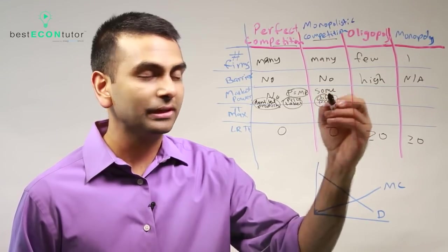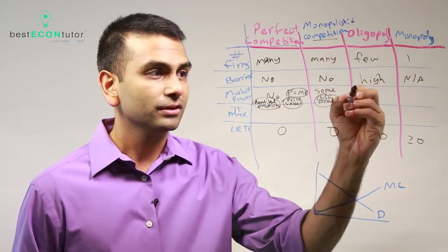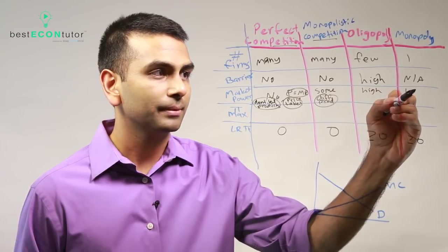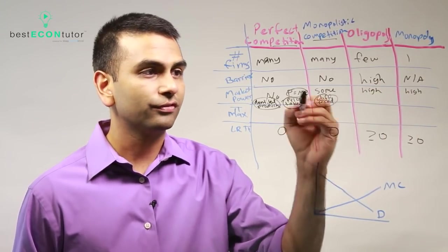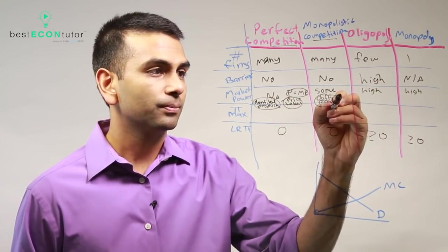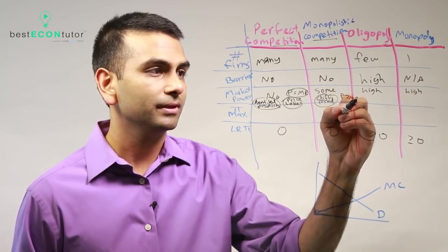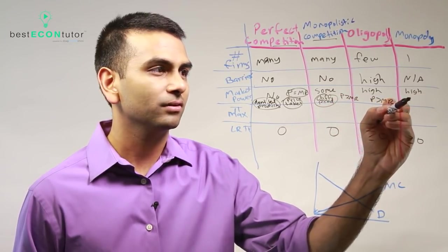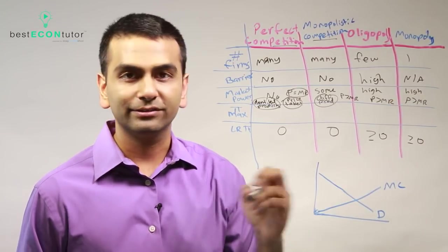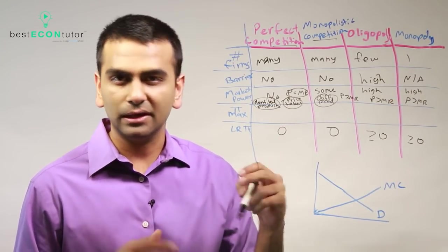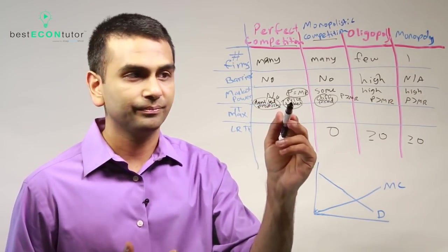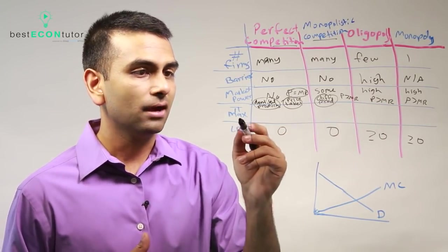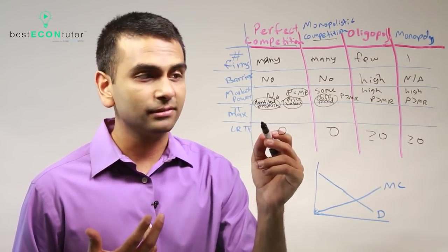For oligopolies and monopolies, you have a high degree of market power. Long story short, for all three of these — monopolistic competition, oligopoly, and monopoly — price is above MR, meaning P is greater than MR. You are not a price taker; that's the mathematical way of saying you're a price setter, or price maker.